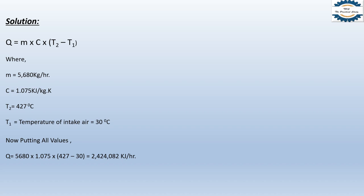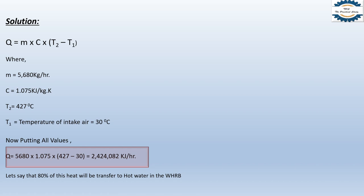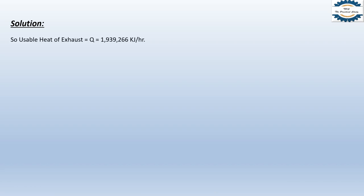Putting all the values in, we get Q = 2,424,082 kilojoule per hour. This is the total heat available in the exhaust of the gas generator. However, not all of this heat is converted into steam — it depends on boiler efficiency. Assuming waste heat recovery boiler efficiency of 80%, the usable heat available for steam production is 1,939,266 kilojoule per hour.